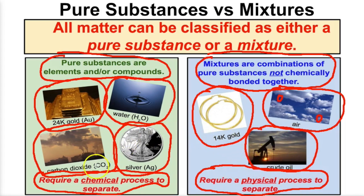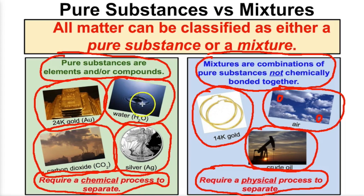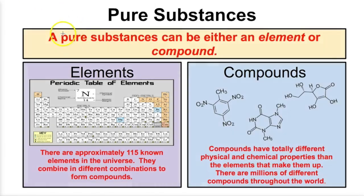Mixtures are always going to require a physical process to separate, whereas pure substances — specifically compounds — are going to require a chemical process to separate. Like water: electrolysis is a chemical process. Separating the hydrogens from the oxygens in water is a chemical process.